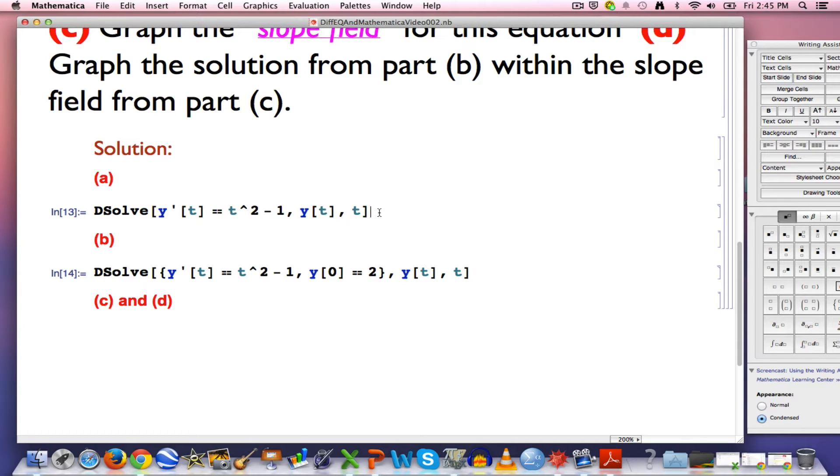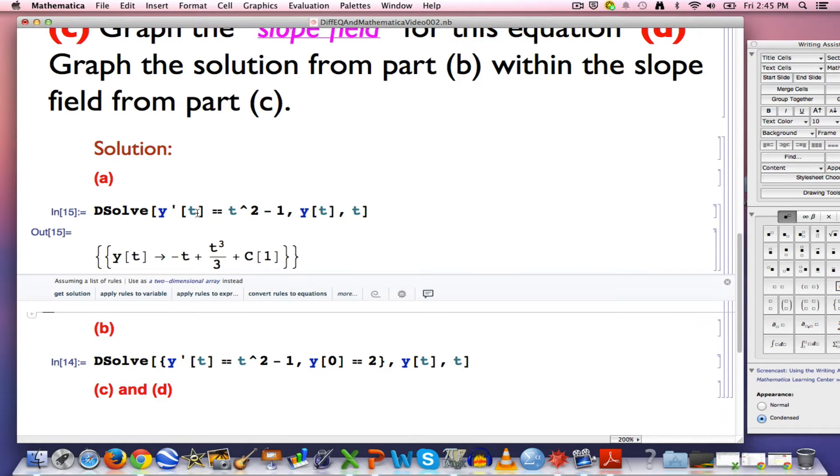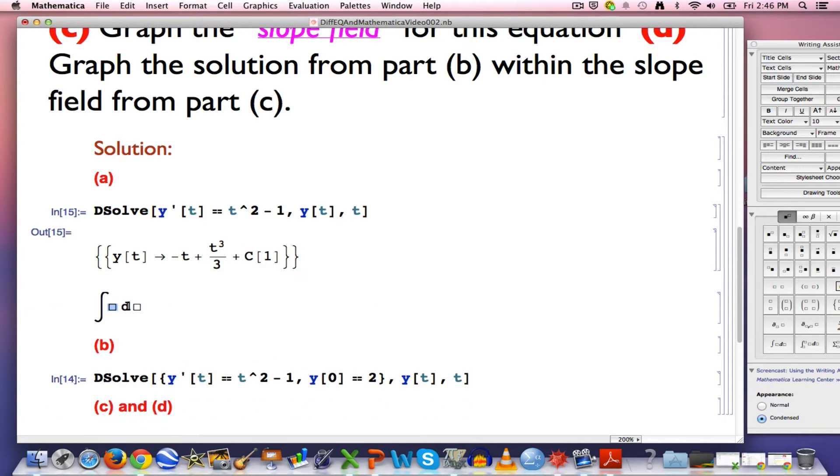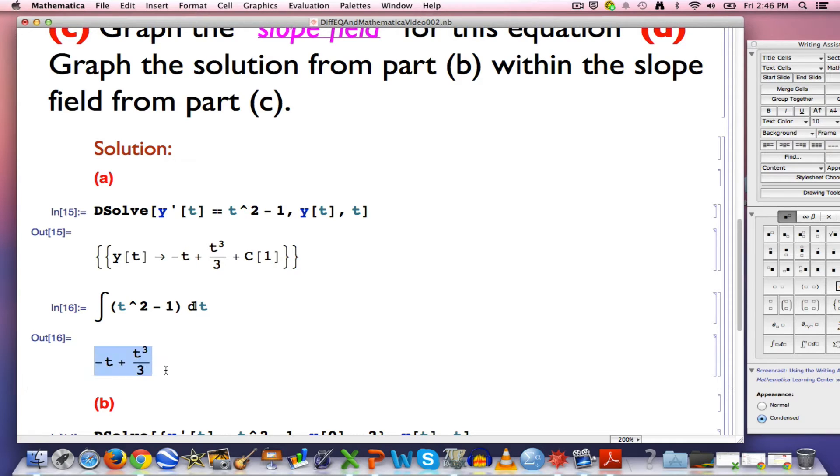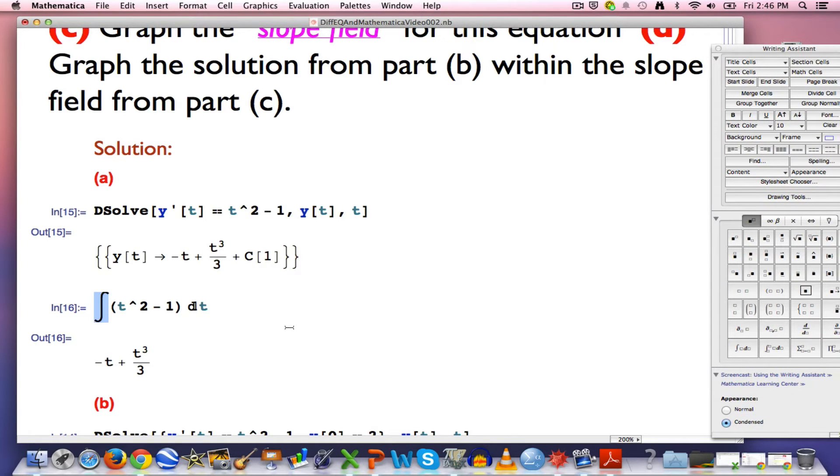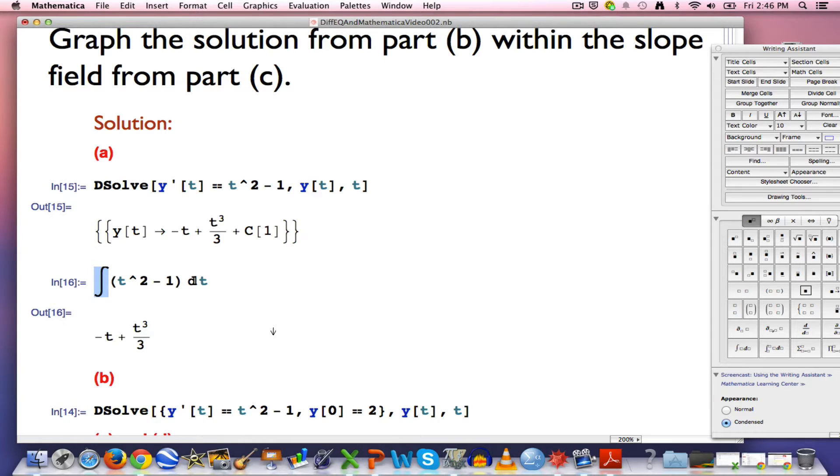You enter this code by doing a shift return, put the cursor anywhere on this line that you like, do a shift return, and here's the output, negative t plus t³/3 plus a constant c, which Mathematica writes as c1, you can just think of that as c. That is the general solution to this. You can also get it by doing an indefinite integral. If I type t² - 1 in here and then do a dt, there's the answer. It is assumed that you would add the plus c to that. Mathematica when using this indefinite integral symbol from this writing assistant palette does not, by convention, put a plus c, but you should do so when you do so by hand.